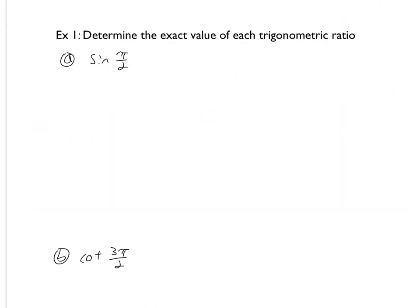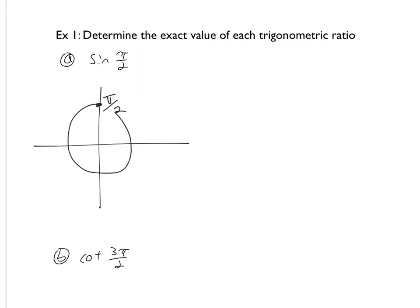Now let's do an example. We want to determine the exact value of sine of π over 2. We know π over 2 is right here — it's 90 degrees. The coordinate at that point is (0, 1). Sine of π over 2 is the y coordinate, so the answer is 1.